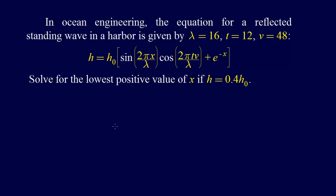I picked out a problem from the book and we're just going to start solving it. This is a problem from the section on civil and environmental engineering. It gives us the equation for a standing wave. In ocean engineering, the equation for a reflected standing wave in a harbor is given by: lambda equals 16, t equals 12, v equals 48, h equals h-naught times sine of (2πx/lambda) times cosine of (2πtv/lambda) plus e to the minus x. Solve for the lowest positive value of x if h equals 0.4 h-naught.